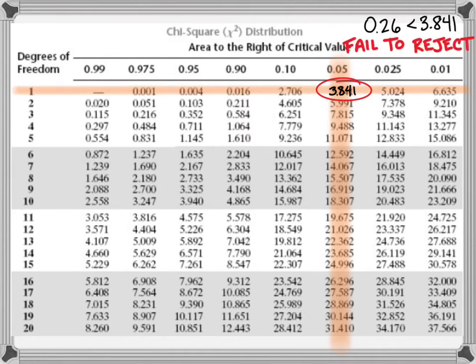0.26 is definitely less than 3.841. You really could look at the observed and the expected values and see that they were kind of freakishly similar, and so in this case, we fail to reject the null hypothesis. We see a good fit in our observed and expected values.